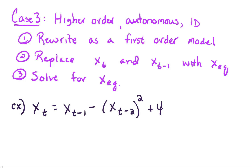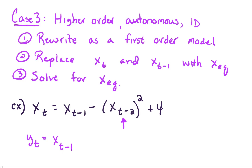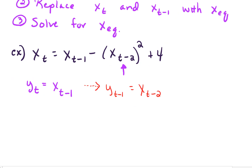Here we have a second-order autonomous system. The term x_{t-2} is preventing us from treating this as a case 1 situation. To fix this, we define a new variable: let y_t equal x_{t-1}. That tells us y_{t-1} equals x_{t-2}, which can be substituted into our equation, making this a first-order system.